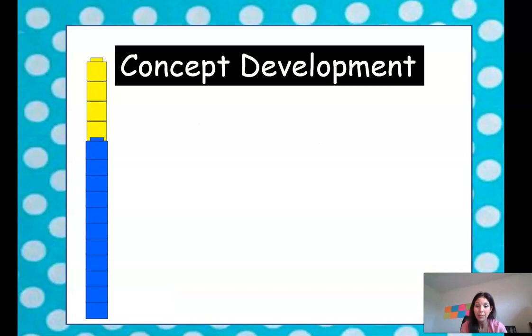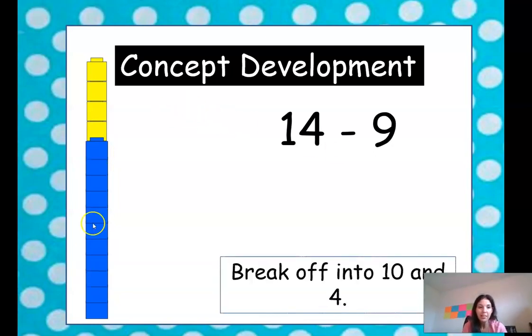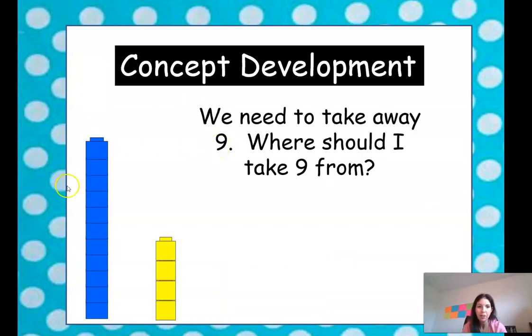Let's look at another problem. 14 minus 9. First, we should break off a 10 and 4. So we're going to separate those. So now we have a group of 10 and we have a group of 4. And we need to take away 9. Where should we take the 9 from? Should we take it from the blue group? Yes, we should take it from the blue group, which is a group of 10.